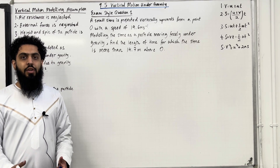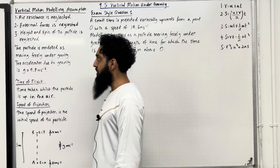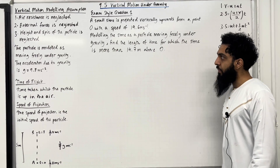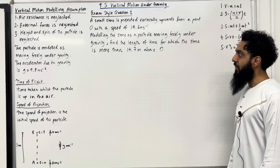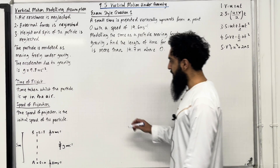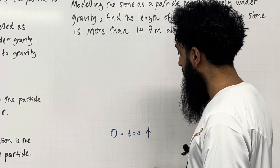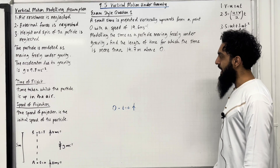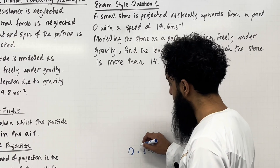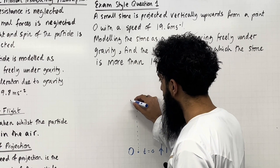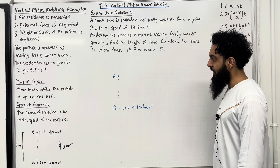With any constant acceleration formula questions, it is particularly useful to draw a diagram. So I'm going to draw a diagram to model this particular problem. The stone is projected vertically upwards from point O with a speed of 19.6 metres per second. Here is the point O and the stone at time t equals 0. The initial velocity is 19.6 metres per second. The particle continues to move upwards — call this point A — and consider O to A to be a displacement of 14.7 metres.